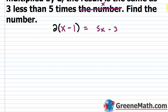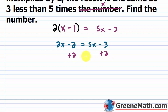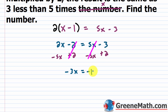The first few times you go through this type of problem it will be a challenge, but you get better with more practice. Distributing to clean up: two x minus two equals five x minus three. Add two to both sides and subtract five x from both sides. On the left, two x minus five x is negative three x, equal to negative three plus two, which is negative one.